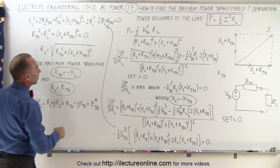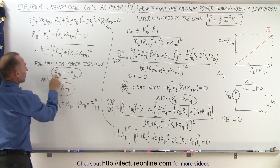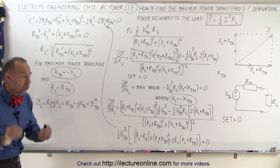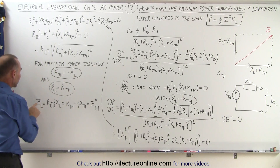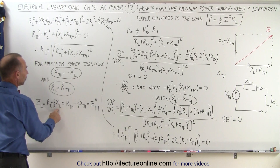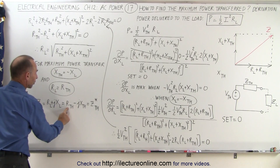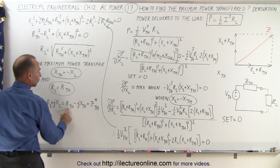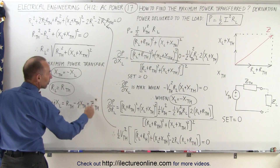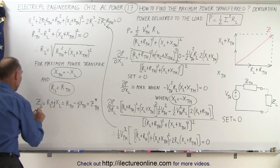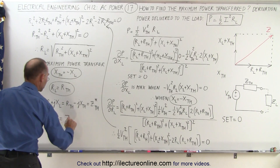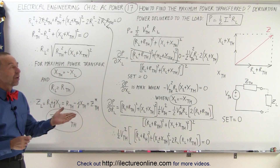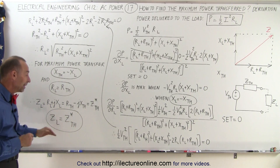Both conditions combined give us maximum power transfer: the Thevenin reactance must equal the negative of the load reactance, and the load resistance must equal the Thevenin resistance. This means the load impedance Z_L = R_L + jX_L must equal R_th - jX_th, which is the complex conjugate of the Thevenin impedance. Therefore, the impedance of the load must equal the complex conjugate of the Thevenin impedance — and when that condition is met, we achieve maximum power transfer from the circuit to the load. And that is how it's done.